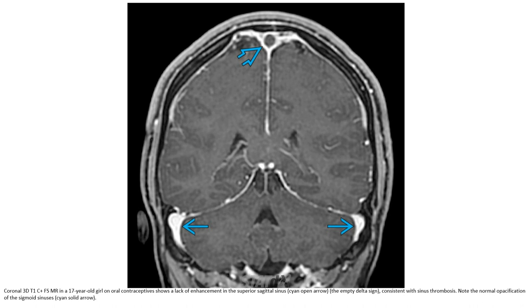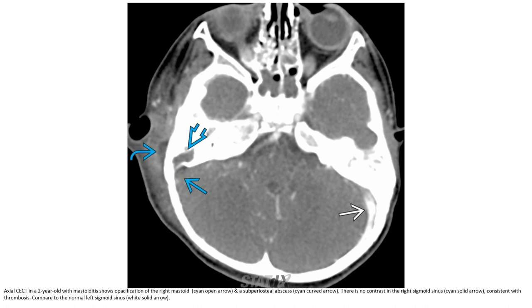Contrast CT in a 17-year-old girl on oral contraceptives: lack of enhancement in the superior sagittal sinus consistent with sinus thrombosis, not the normal ossification of the sigmoid sinus. Contrast CT in a 2-year-old with mastoiditis: opacification of the right mastoid and superior cell abscess, with no contrast in the right sigmoid sinus consistent with thrombus compared to the normal left sigmoid sinus.